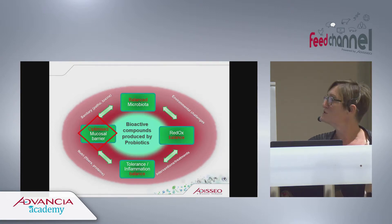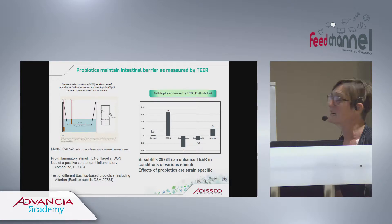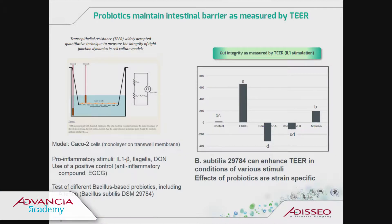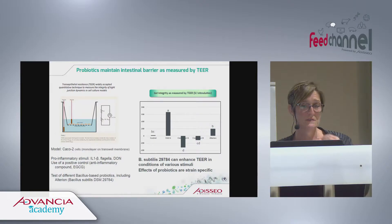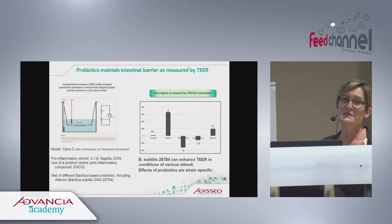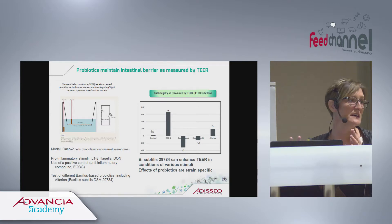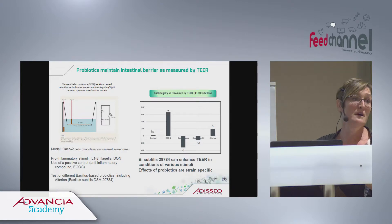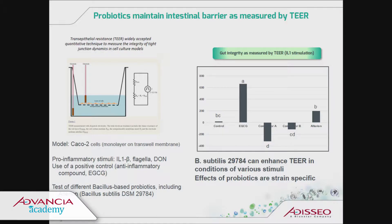Let's start with the mucosal barrier, which we discussed this morning. I will take some examples from Raquel's presentation, especially looking at the models she spoke about. Let's start with the one based on CACO2 cells, where we measure trans-epithelial resistance of the cells. We used this model to study the effect of probiotics. It's easy to understand that you're looking at the direct effect of probiotics on the barrier, because there is no microbiota in the system.